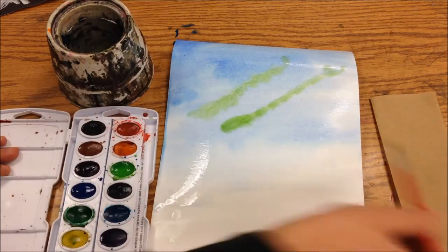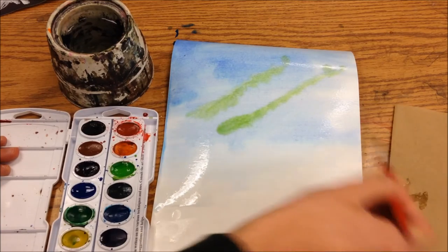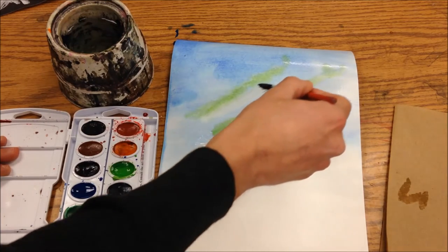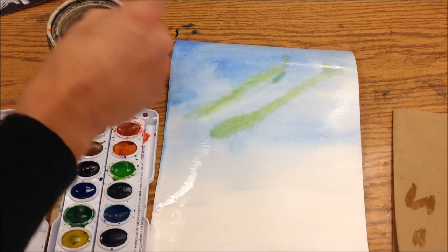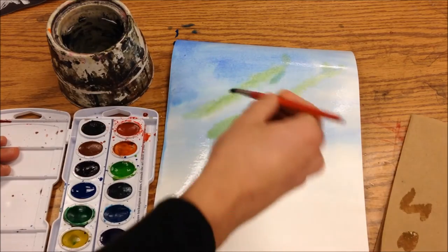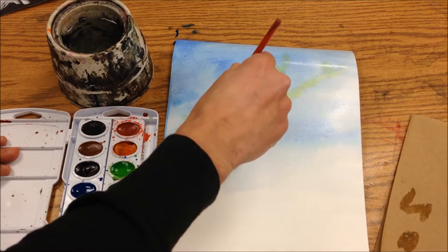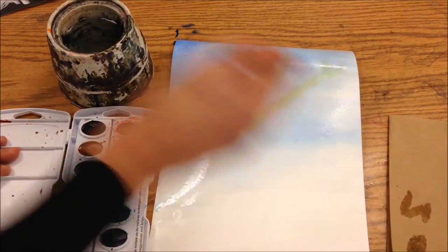All right, I'm actually going to dry my brush off and kind of take some of that pigment off. So it makes it a little bit white underneath, just almost like a sponge.